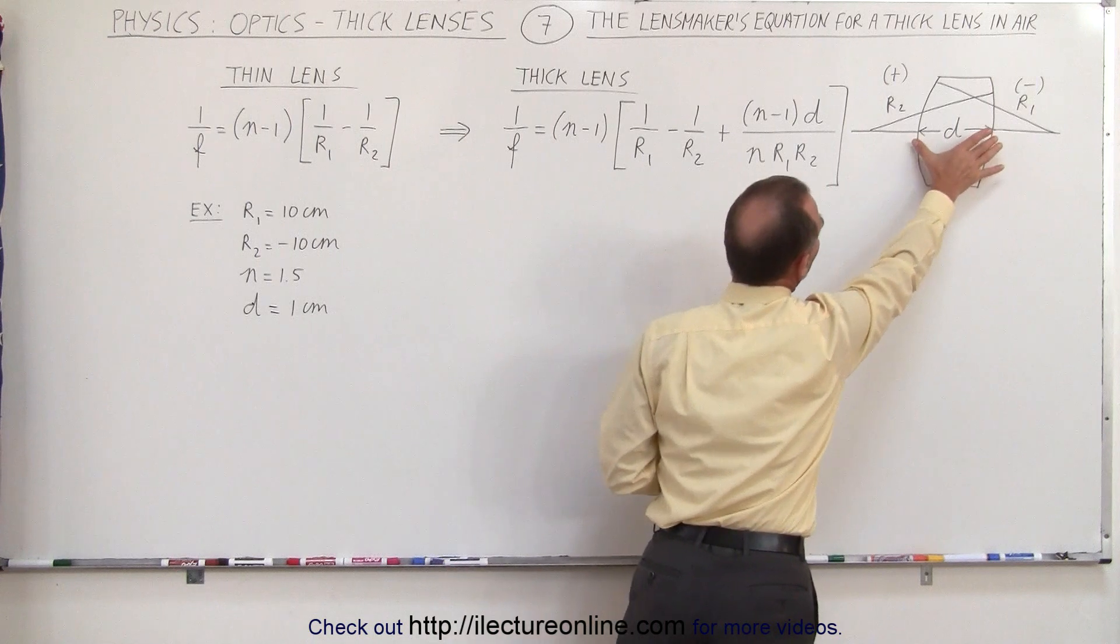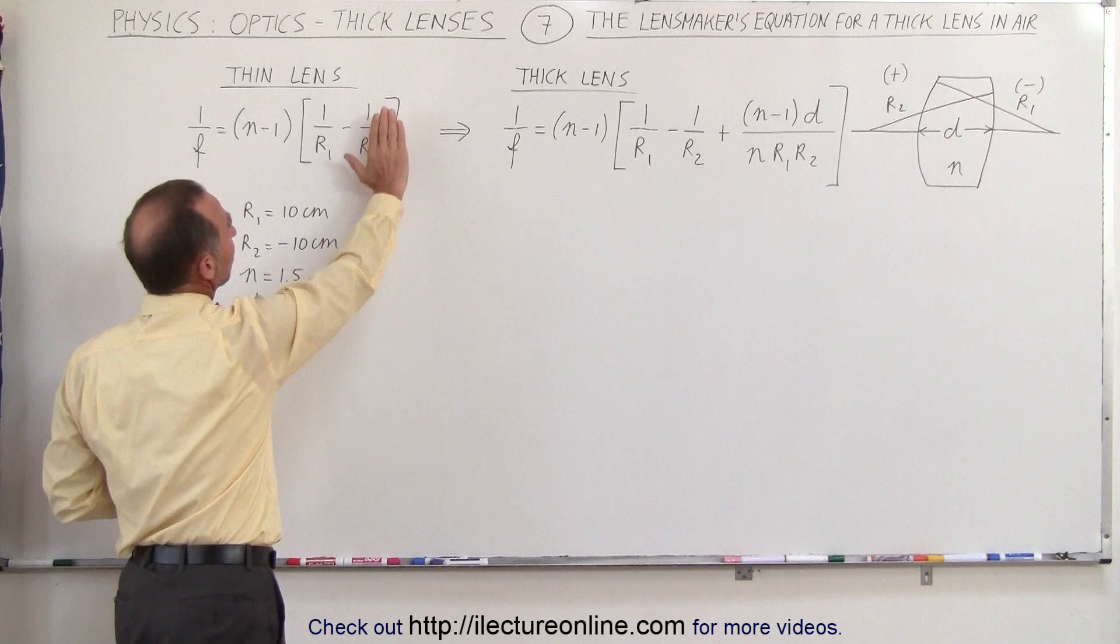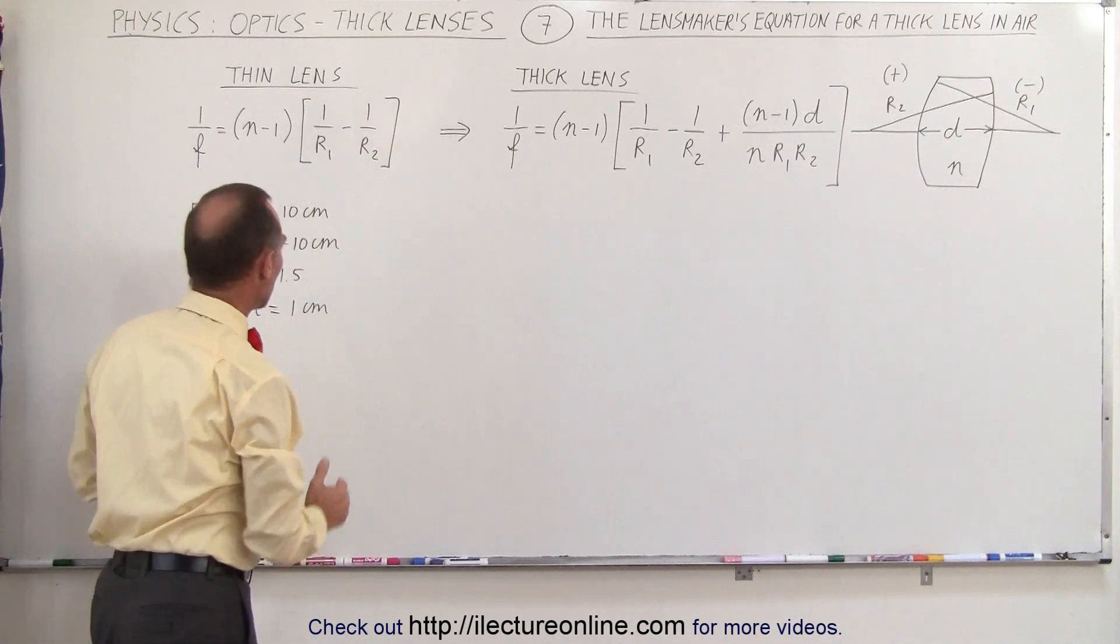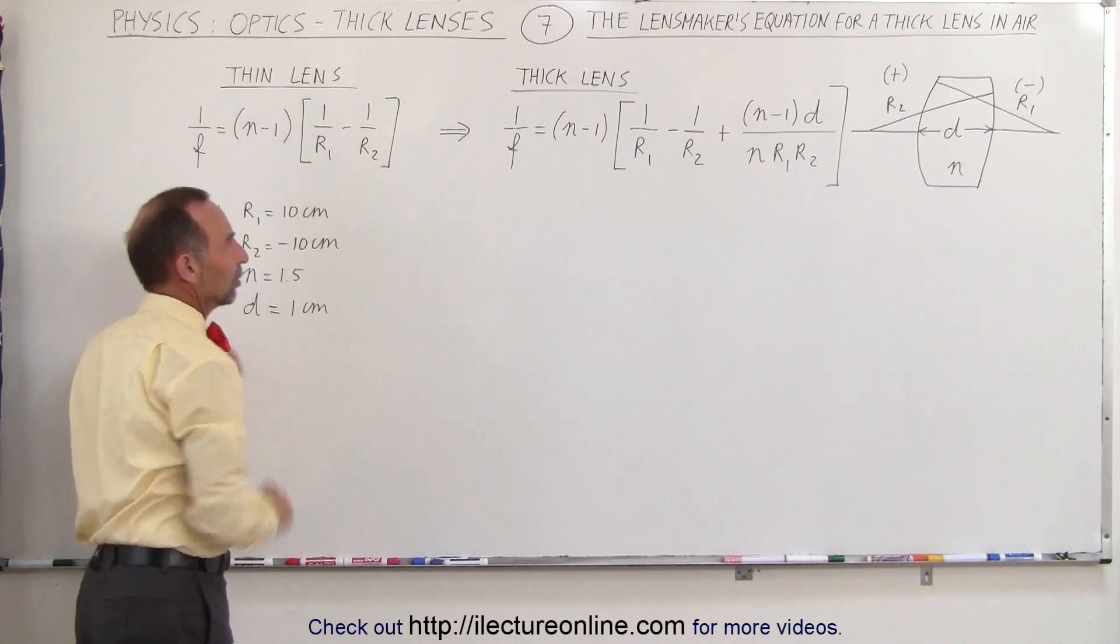d is the thickness of the lens, but if we assume it to be a thin lens d goes to 0, so we don't have an additional term inside the brackets. We'll work out an example of what the focal length would be like for a thin lens with these parameters.